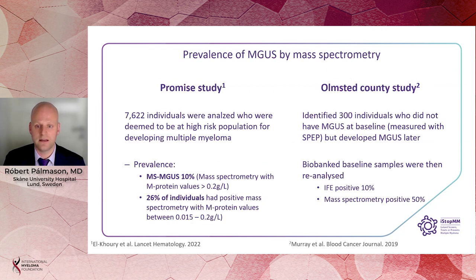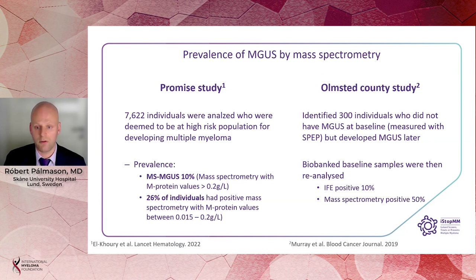The use of mass spectrometry in identifying M protein has been studied previously. The PROMIS study analyzed over 7,000 individuals who were deemed to be at high risk for developing myeloma and related disorders. They observed that around 10% of individuals had an M protein over 0.2 grams per liter according to mass spectrometry. The cutoff of 0.2 grams per liter is roughly the same as we see with immunofixation. But they also observed a lower value of M protein in 26% of individuals with a size between 0.015 and 0.2 grams per liter.